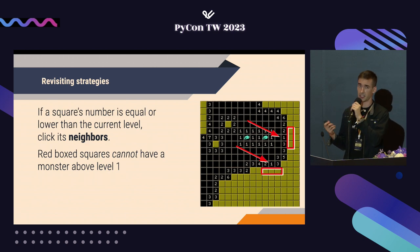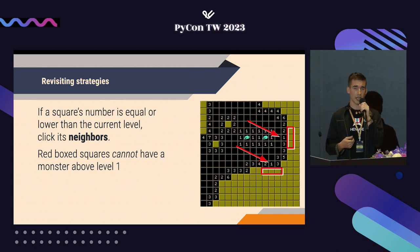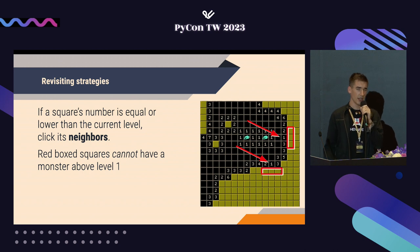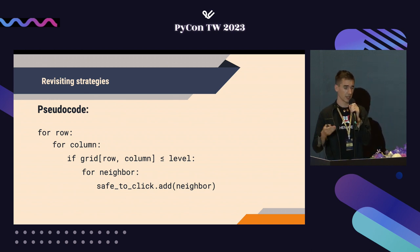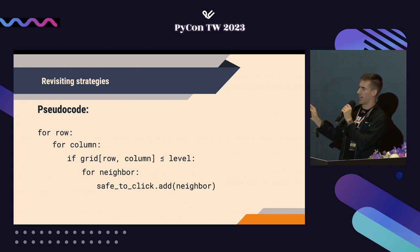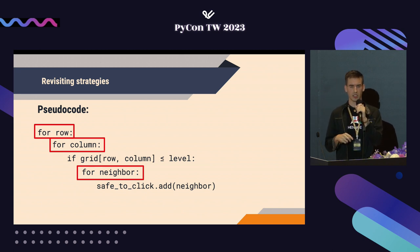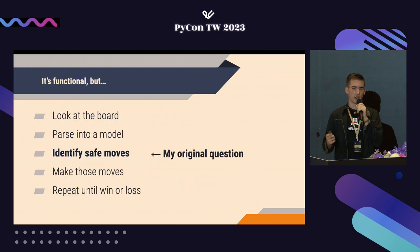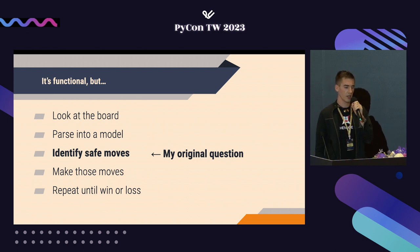Of course we can do more, starting with that strategy I mentioned. The simplest one — that any beginner would figure out — is that if you see a number and your level is greater than or equal to that number, all of the neighbors can be clicked; you're guaranteed not to run into damage. The pseudocode looks like: for every row, for every column, look at the number less than or equal to the level, and for every neighbor, add it to a set that's safe to click. This code isn't bad, but Python doesn't like nested for loops — as an interpreted language it struggles, and there's indentation hell.